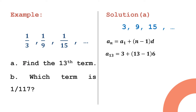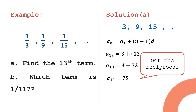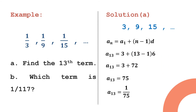Using the arithmetic sequence formula: a₁₃ = 3 + (13 − 1) × 6. Simplifying: 13 minus 1 is 12, and 12 times 6 is 72. So a₁₃ = 3 + 72 = 75. Note that 75 is the 13th term of the arithmetic sequence, not the final answer. To get the 13th term of the harmonic sequence, we take the reciprocal: the 13th term is 1/75.